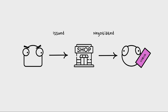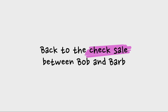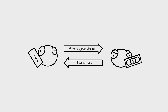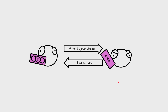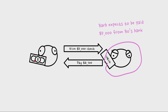Bob has the check and is now trying to sell it. He's approached Barb to sell this $5,000 check for $4,700. So the check is now in Barb's hands and the $4,700 has gone to Bob. Barb's expectation is that Bo's bank — the drawee bank — is going to pay when that check is presented, because Bo ordered his bank to pay.